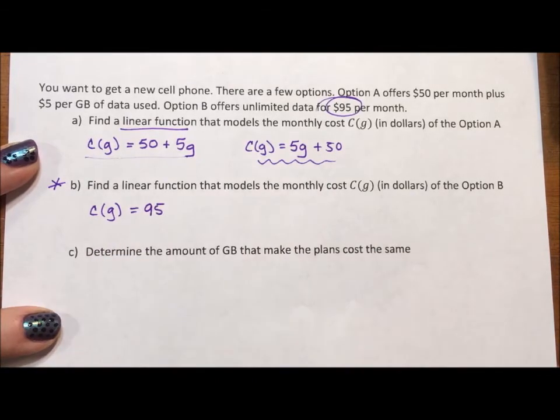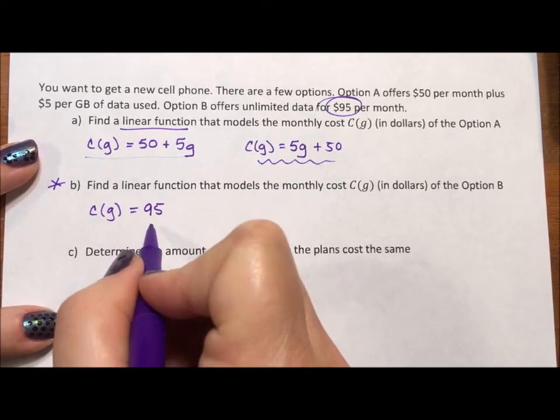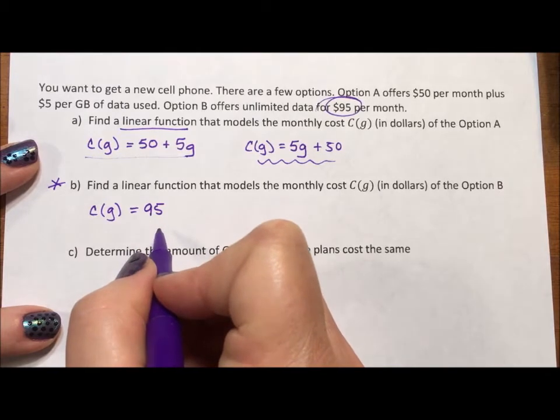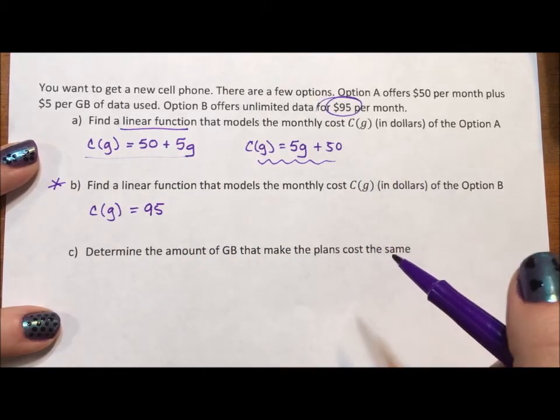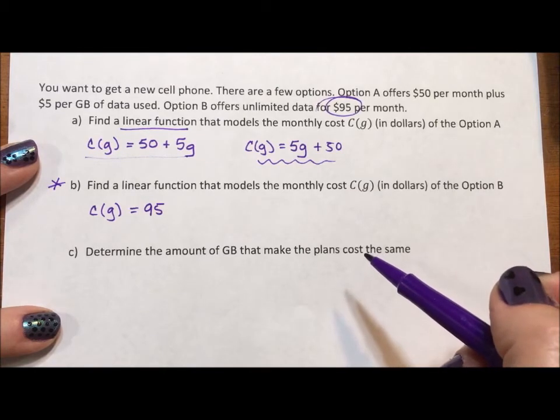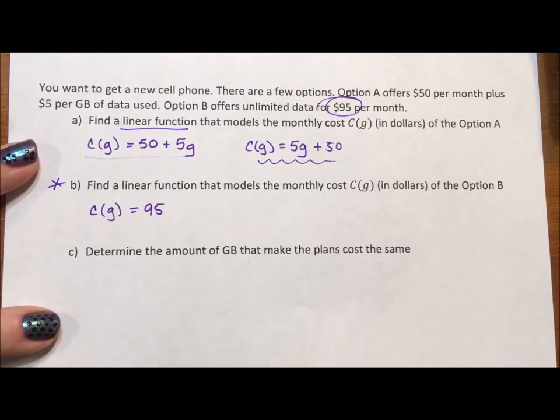It means there should not be a g in this equation. And this happens a lot in equations, especially these story problems to see if you understand when your slope should be zero versus something bigger.